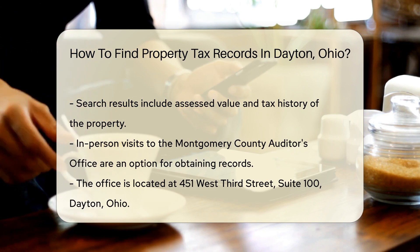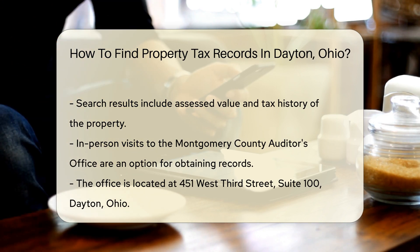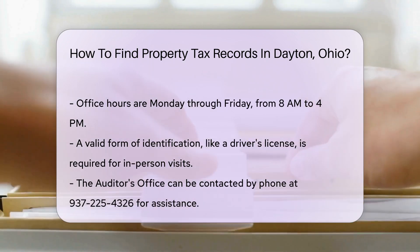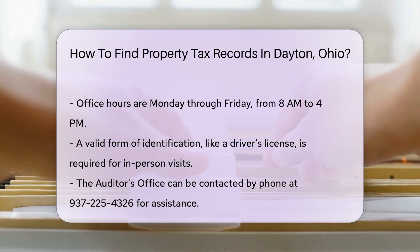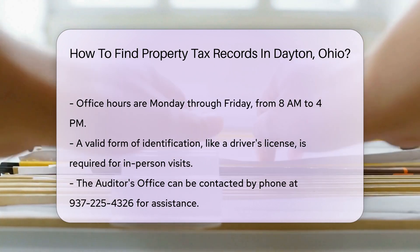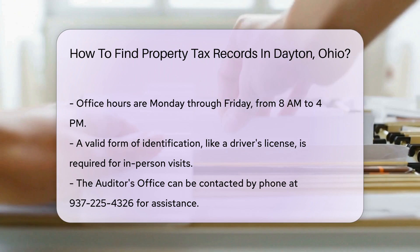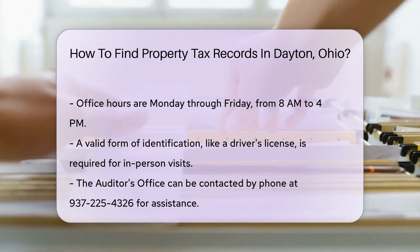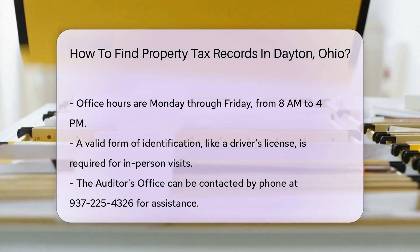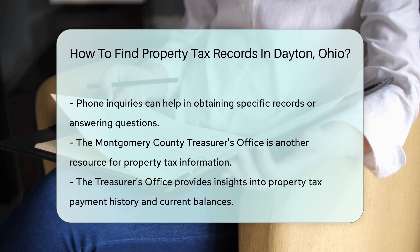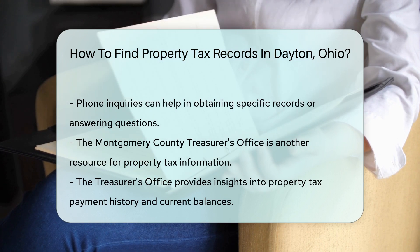If you prefer to visit in person, head to the Montgomery County Auditor's Office, located at 451 West 3rd Street, Suite 100, Dayton, Ohio. Their office hours are Monday through Friday from 8 a.m. to 4 p.m. Bring a valid form of identification, such as a driver's license, for verification. Another option is to contact the Auditor's Office by phone. You can call them at 937-225-4326 for assistance.